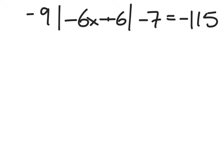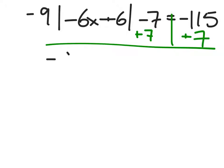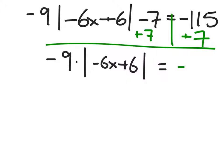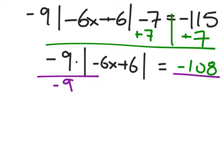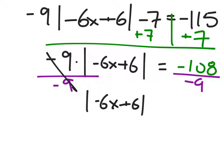We need to get rid of the minus 7 by adding 7 to both sides. Then we have negative 9 times the absolute value of negative 6x plus 6, which equals negative 115 plus 7, giving us negative 108. To get the absolute value by itself, divide both sides by negative 9. The negative 9s cancel out, and negative 108 divided by negative 9 is 12.